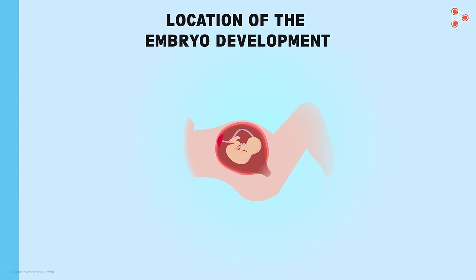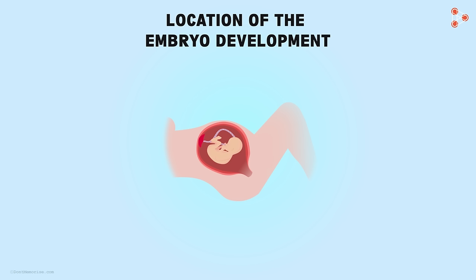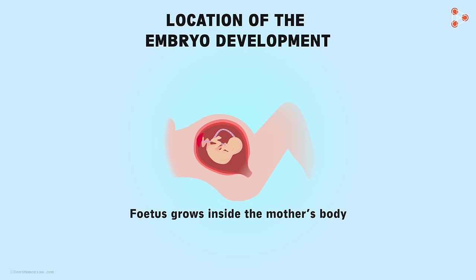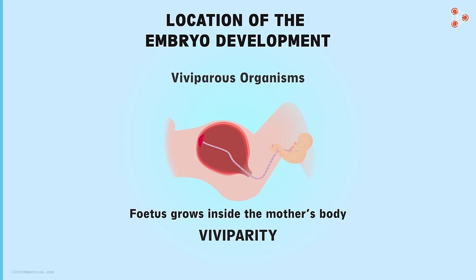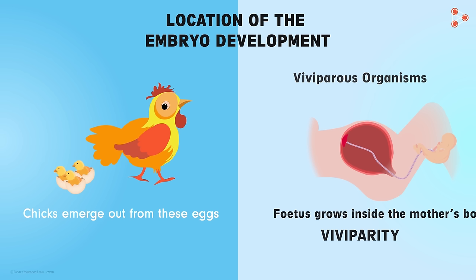The first type is as we have seen in the case of humans: the fetus grows inside the mother's body, resulting in the mother giving rise to the young one directly. Such a type is called viviparity, and these organisms are called viviparous organisms. On the other hand, the case of the hen is an example of oviparity, and the organisms exhibiting it are called oviparous organisms.